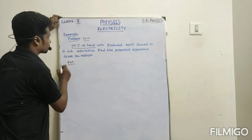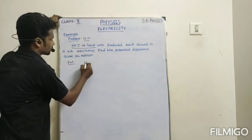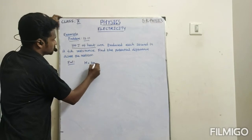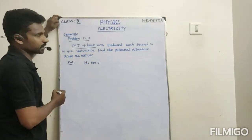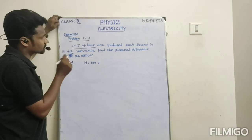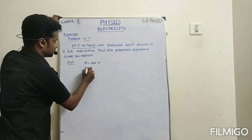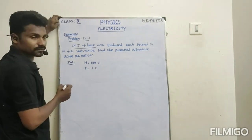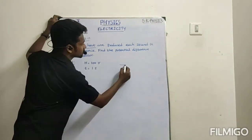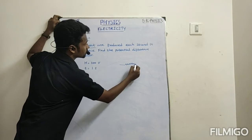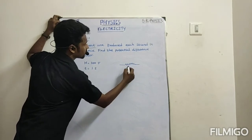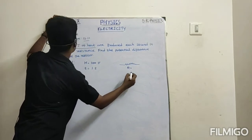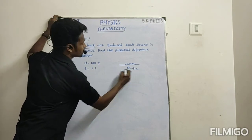So here, firstly you can write what is given. Heat is given, so H is equal to 100 joules. 100 joules of heat are produced in each second, that means time is given as 1 second. So heat is produced in a resistance, the resistance value given is 4 ohm resistor.